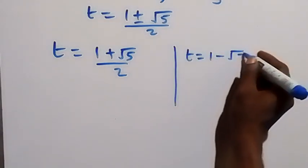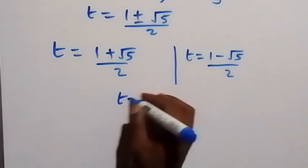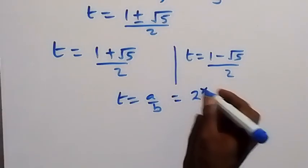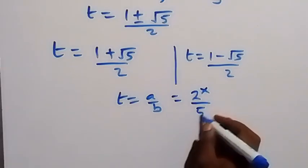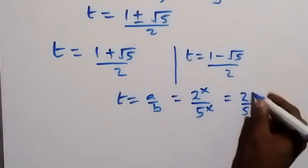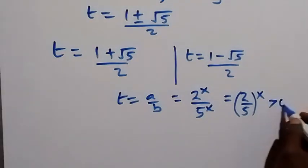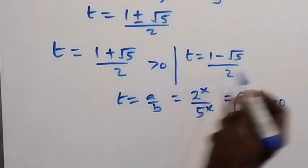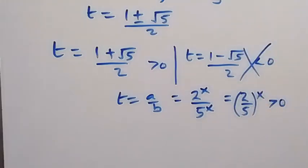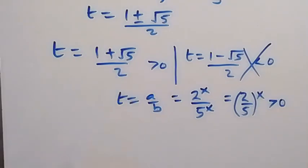From what we represented t as — t equals a over b — and a equals 2 raised to power x, b equals 5 raised to power x, t can be written as (2 over 5) raised to power x, since the power x is common. This expression is always greater than zero. The second value (1 minus root 5)/2 is less than zero, so it cannot be the solution. We discard it.